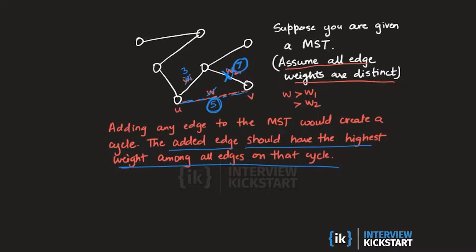We clearly want the edges on the spanning tree to have the smallest possible weights in order to minimize the total cost. The edges that are left out of the spanning tree are going to have higher costs, which is why adding them will always create a cycle in which they themselves will be the most expensive edges.